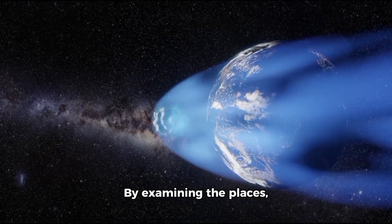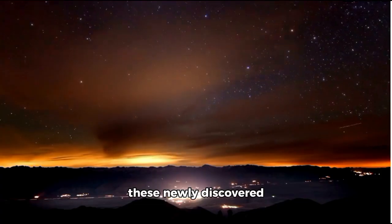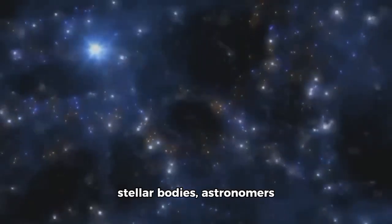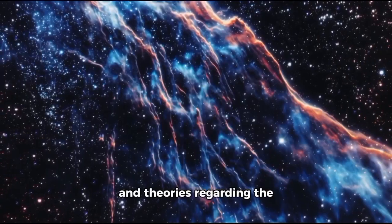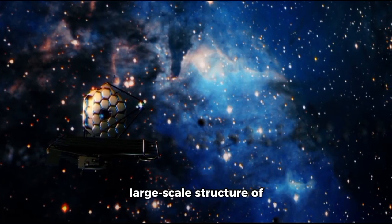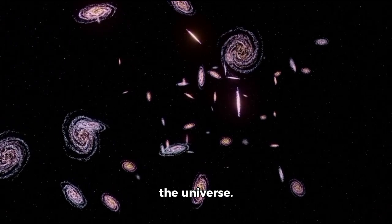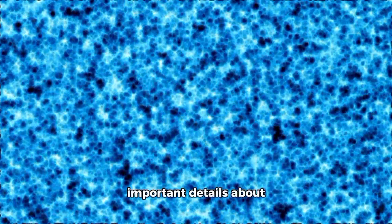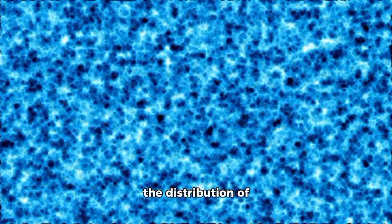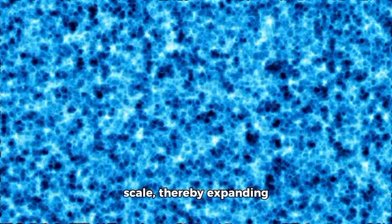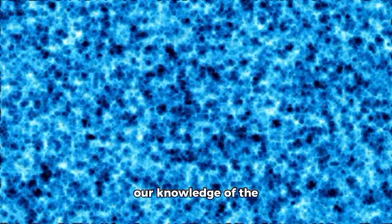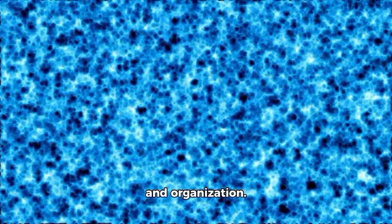By examining the places, orbits, and attributes of these newly discovered stellar bodies, astronomers can refine existing models and theories regarding the large-scale structure of the universe. These findings provide important details about the distribution of matter across an entire scale, thereby expanding our knowledge of the universe's composition and organization.